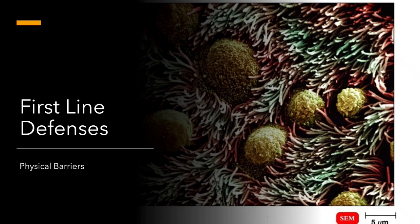Hello, and welcome to part two of our lecture on the innate immune system. We're going to be talking about first-line defenses, or physical barriers. We will also include in our first-line defenses some chemical barriers.